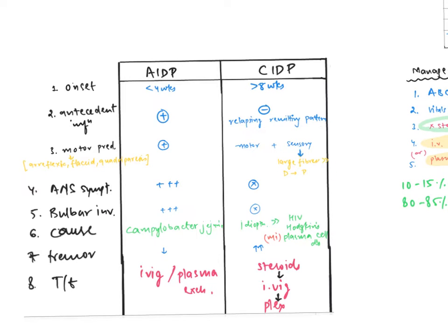Next point: ANS symptoms are present in acute but not in chronic. Pharyngeal muscles will get involved in acute inflammatory demyelinating polyneuropathy. Regarding causes, the most important cause of acute is Campylobacter jejuni, along with EBV, hepatitis A and B, CMV, and Zika virus. For chronic, the most common cause is idiopathic. Apart from idiopathic, we have HIV, Hodgkin's, and plasma cell disorders. Plasma cell disease is the most important point - don't forget.